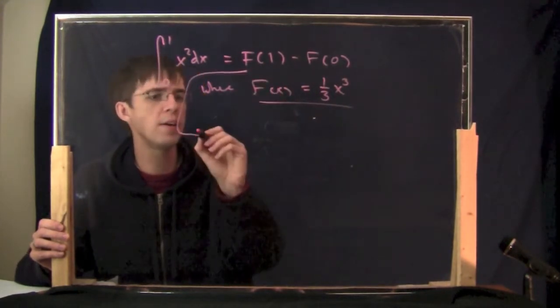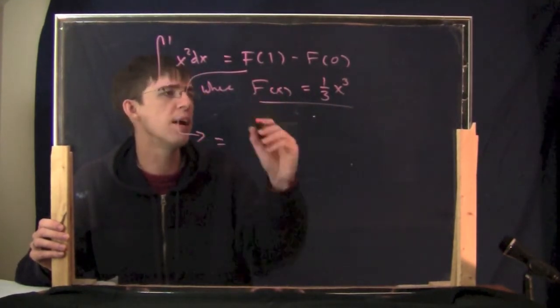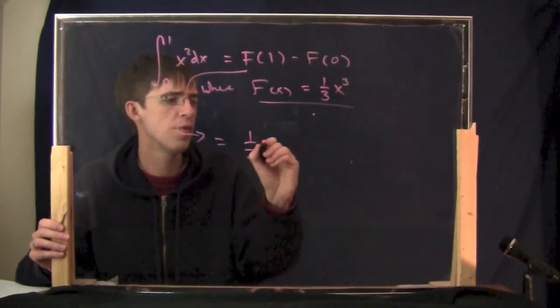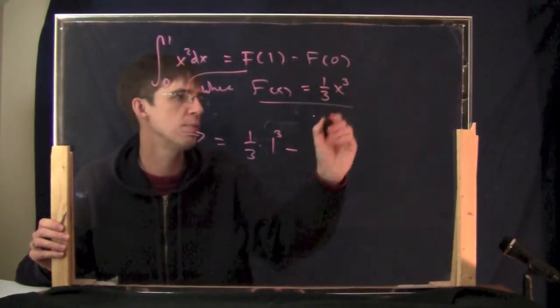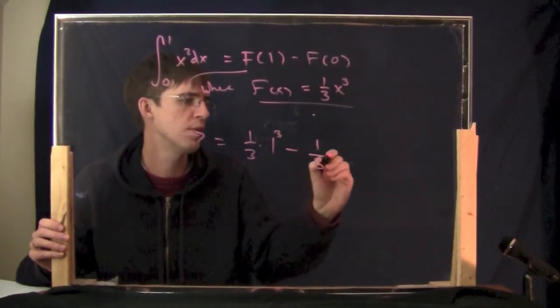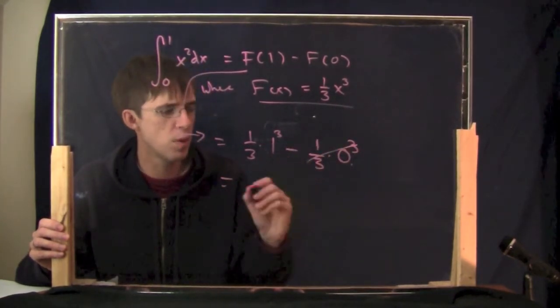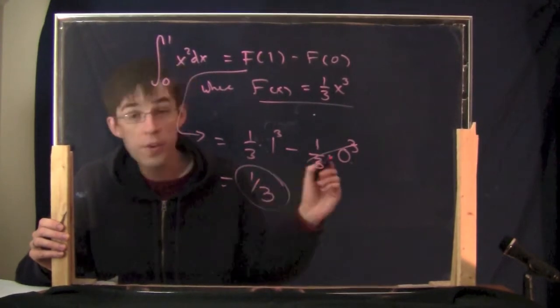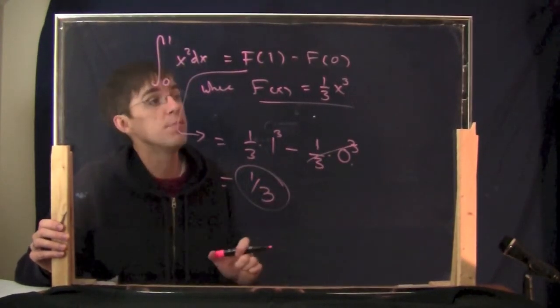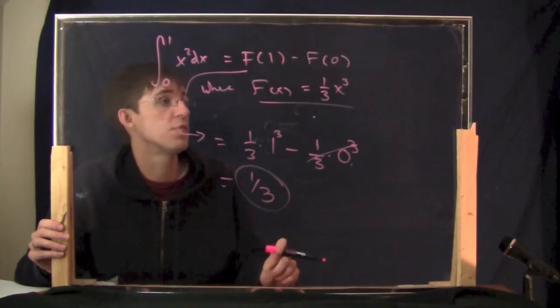Anyway, this is F of x, so right here, I can continue. This equals big F of 1. You plug in 1 here. It's one-third times 1 cubed minus you plug in 0 here. One-third times 0 cubed. And that's just 0. And this 1 cubed is 1. So the answer is one-third. There you go. Now you should really believe me that the area under this curve is one-third.